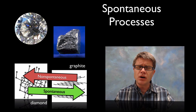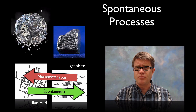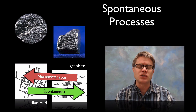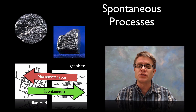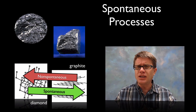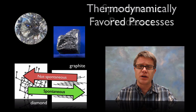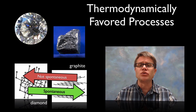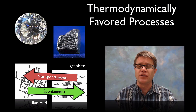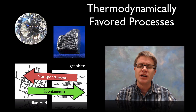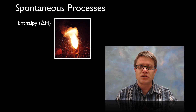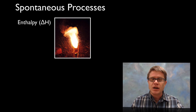But you know that a diamond just doesn't break down into graphite — it takes millions of years for that to occur. So 'spontaneous process' is probably a bad term; it's better to use 'thermodynamically favored process,' though that's too much of a mouthful.